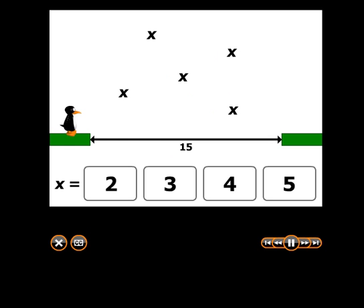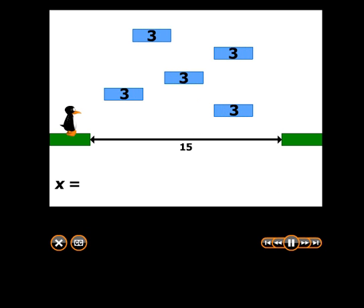In this game, we can keep adding more x's in the sky. For example, here there are five x's, and the gap in the ground is fifteen. How wide does each x need to be to create a bridge? The answer is three, because five times three equals fifteen.